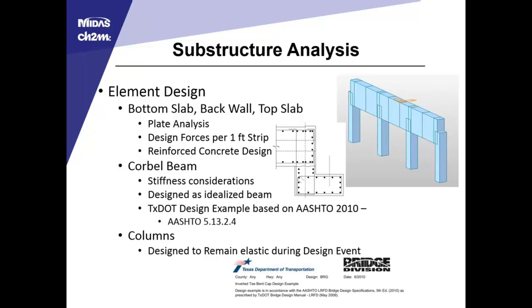The corbel beam: stiffness considerations were given to idealize a beam to represent that L-shaped corbel, and also approximate how much of the top slab was serving as a beam element. For the design of the ledge corbel itself, we used the TxDOT design example based on the 2010 AASHTO and checked the 2012 AASHTO for applicability. That checks all the independent failure mechanisms: punching shear, moment about various elements, pure tension in the stem, moment about the ledge, interface shear, and so on.